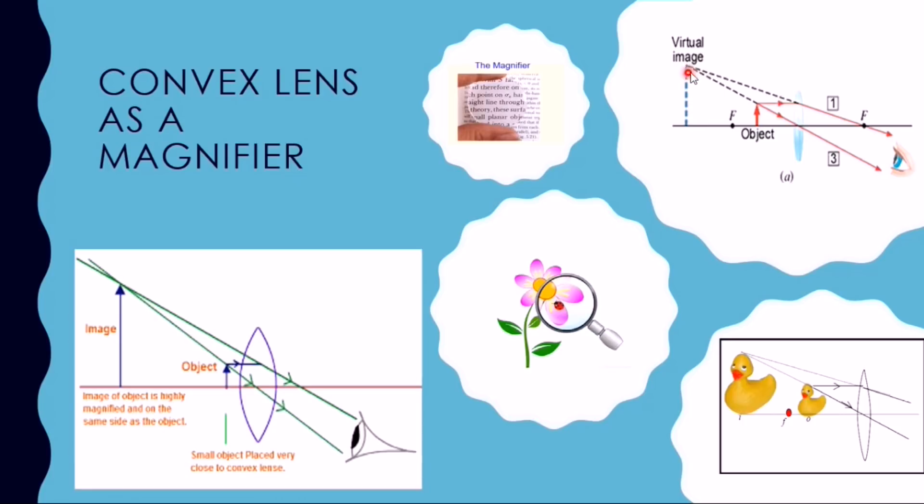It can be seen that image of the object is highly magnified and on the same side as the object. In short, in order to get a magnified image of the object, object needs to be placed inside or within the focal length or close to the convex lens.